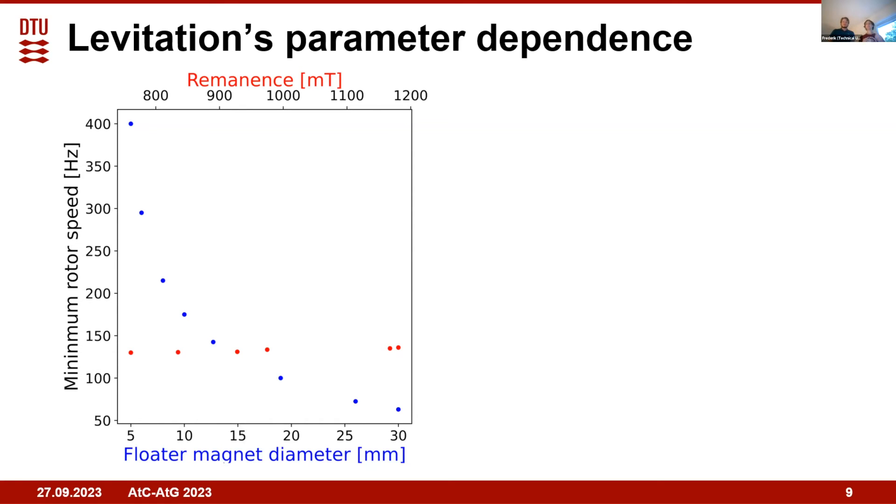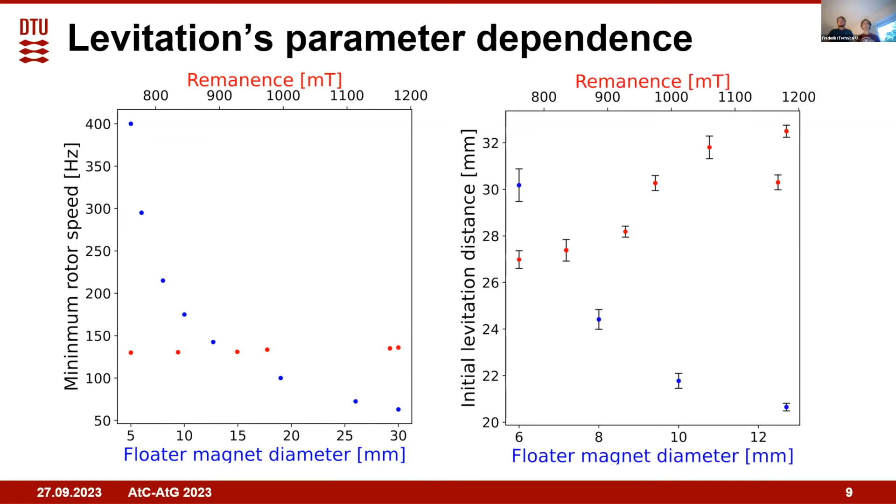On the other hand, if you look at what distance the levitation happens, when you have a larger magnet they tend to levitate closer to each other, whereas a stronger magnetic remanence would cause the magnets to levitate further away.